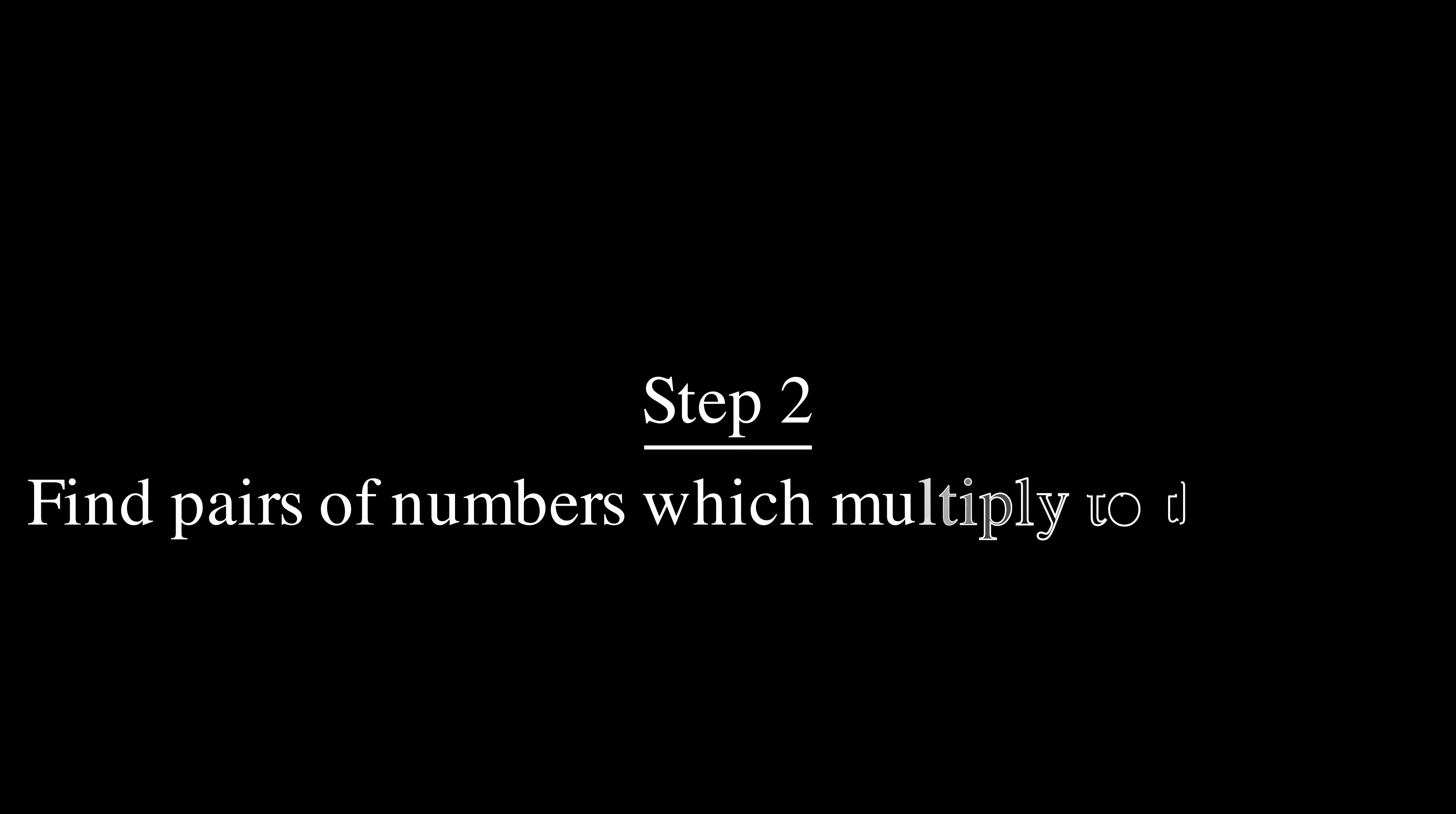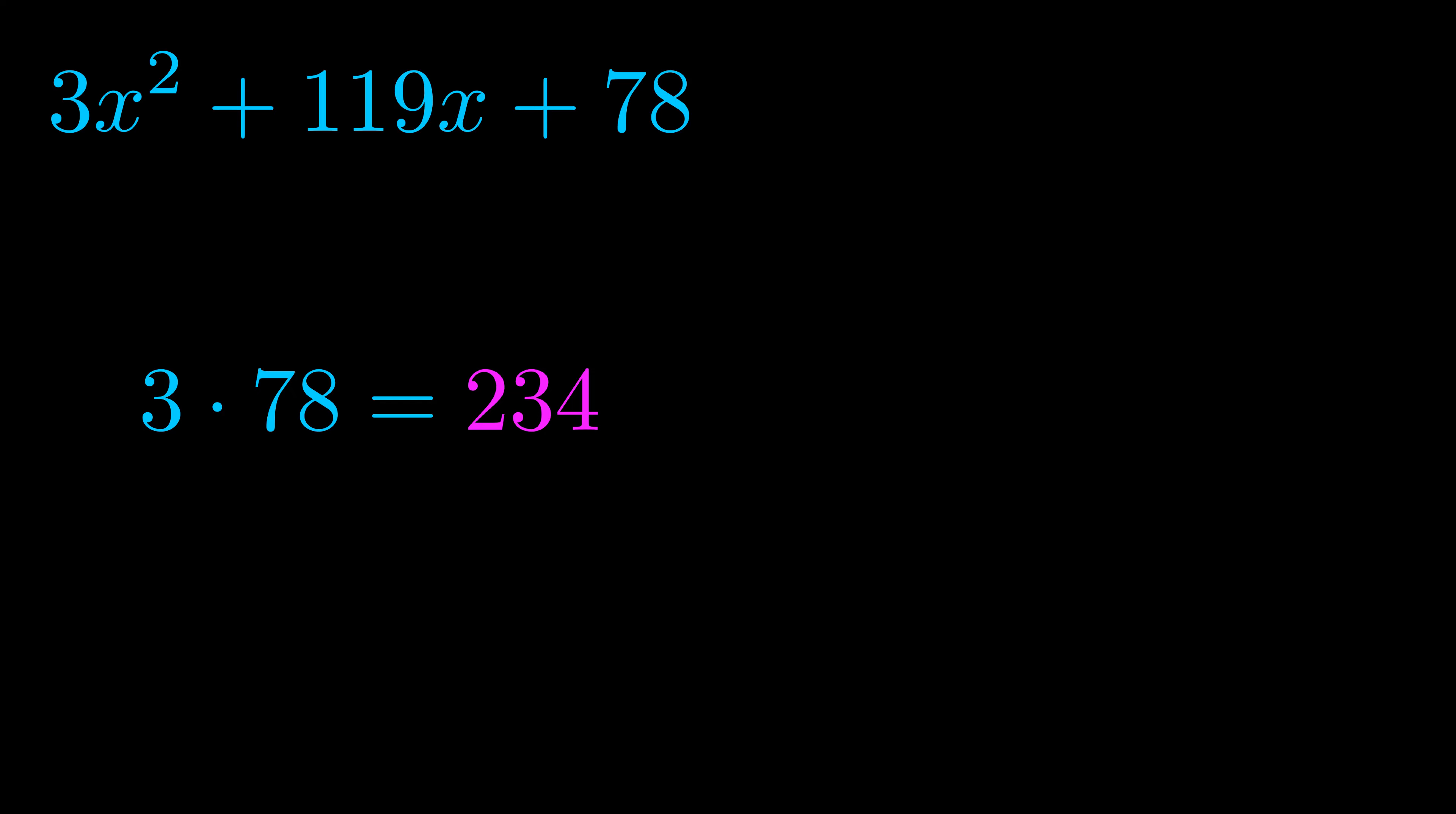Step two is to try to find all of the pairs which multiply to this number. Now turns out you don't really need to find all of them but go ahead and write down as many numbers as you can that multiply to the magenta value for now. Pause the video and resume when you're ready to continue.